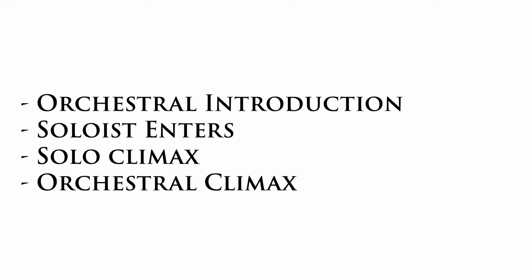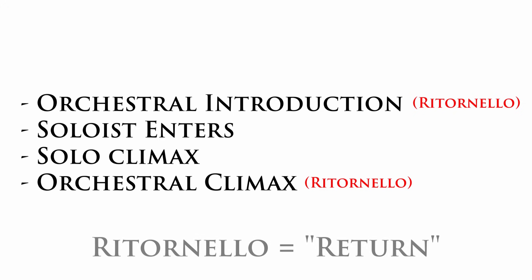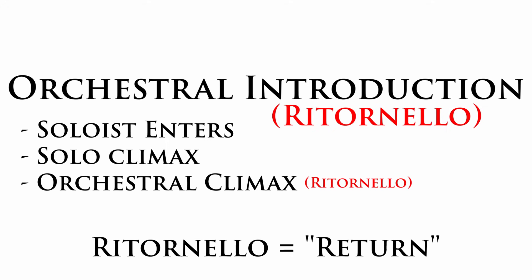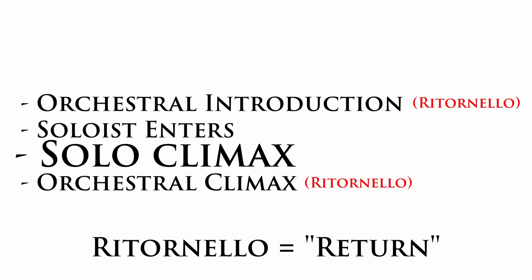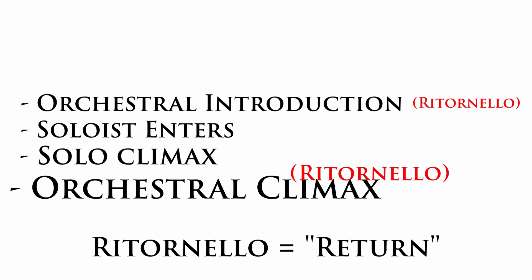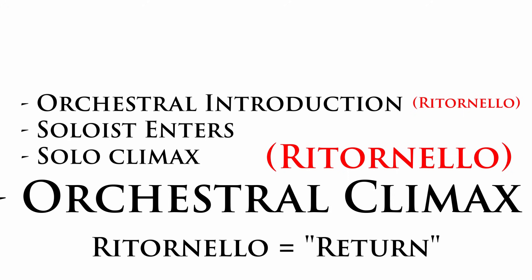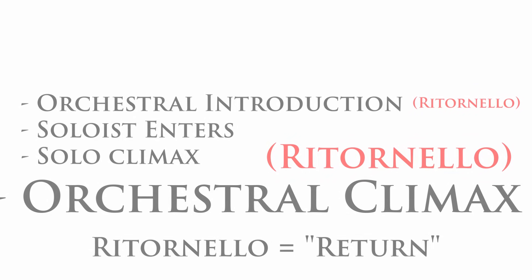In earlier music, we call these framing orchestral tutti sections the ritornello. Ritornello is based on the Italian word for 'return,' so it's kind of like the chorus of a song which we keep returning to, and these are separated by interludes for the soloist. So in the Handel aria that we listened to, the first 20 seconds of the piece are called the ritornello — it's for orchestra only. And the last 20 seconds too, once the soloist finishes his climax, are the same ritornello. But that's an aria, not a concerto. So let's look at a concerto now.